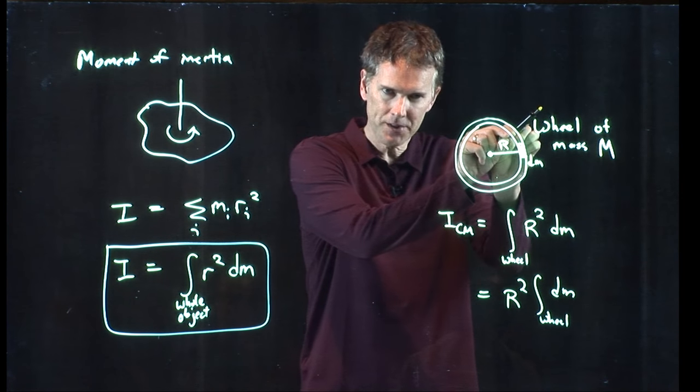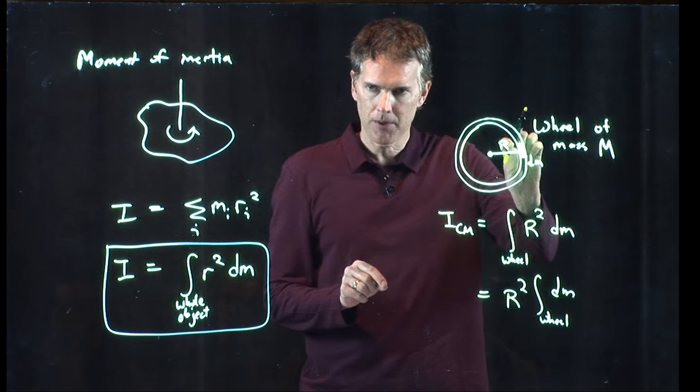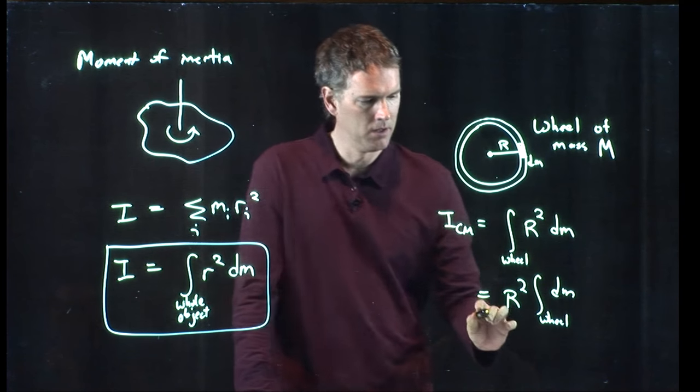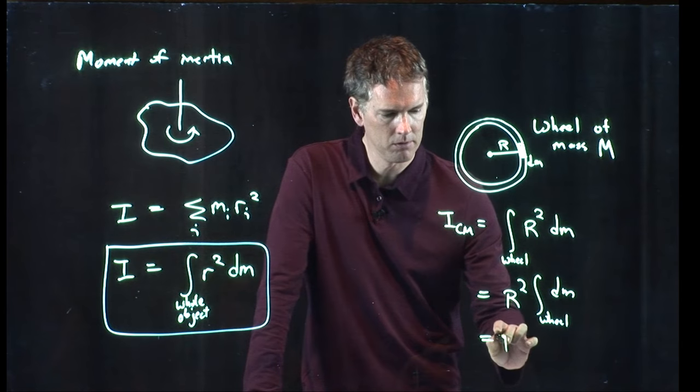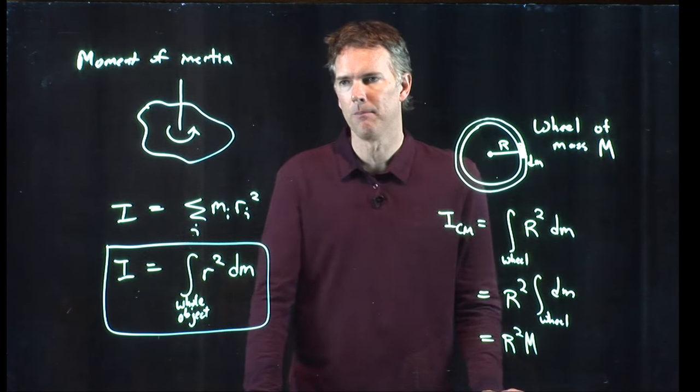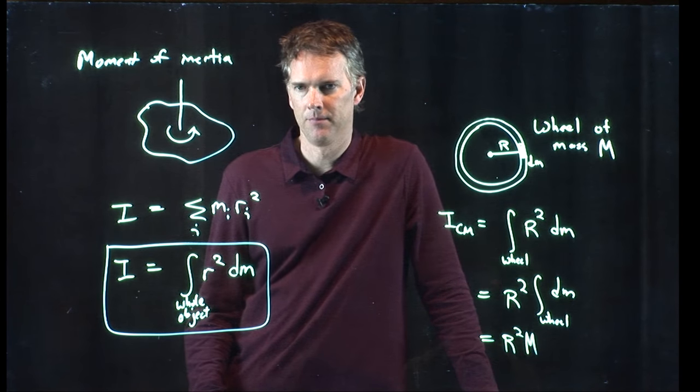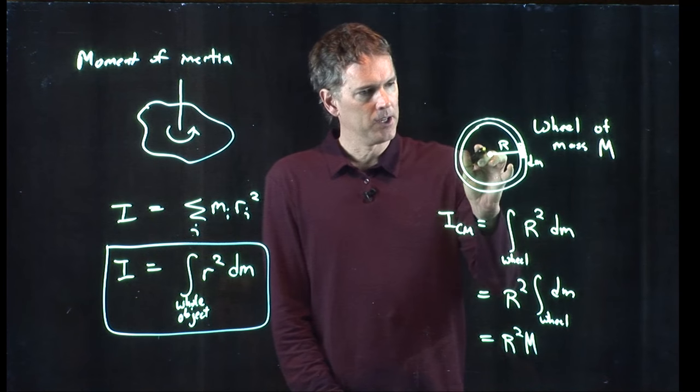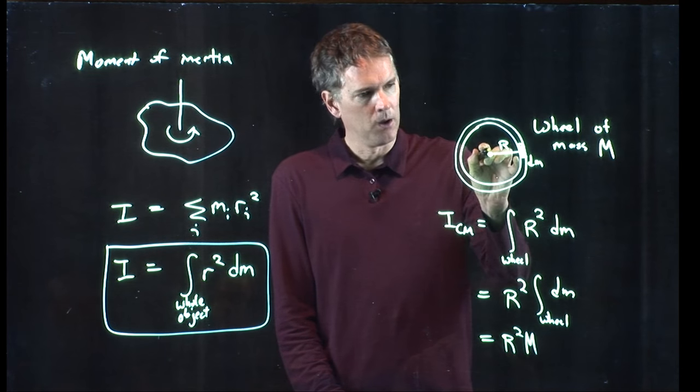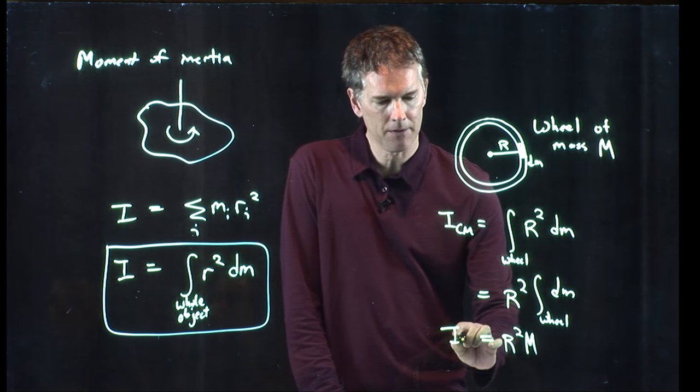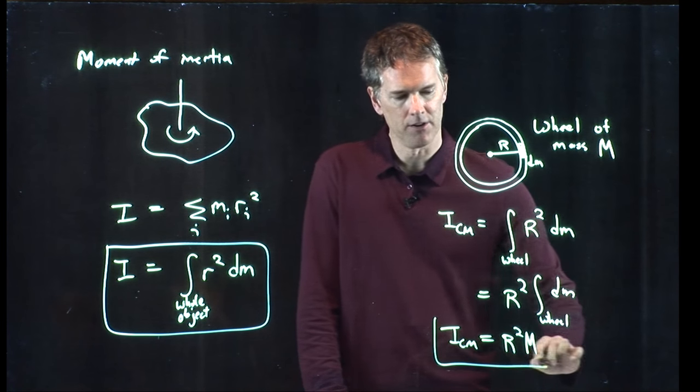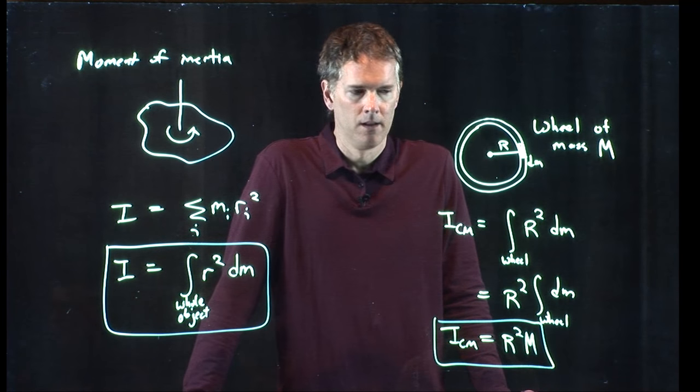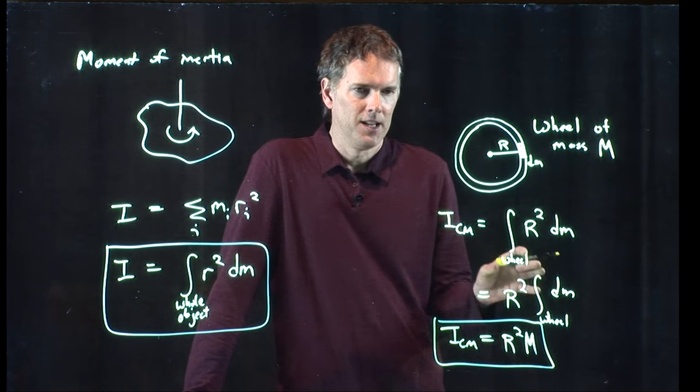But if I just take a little dm and I add up the next one and the next one and the next one and I do that for the entire wheel, that just becomes the total mass m of the wheel. So what is the axis of rotation? It's the center of mass here. What is the moment of inertia about that center of mass? It's just mr squared. That was a simple example.